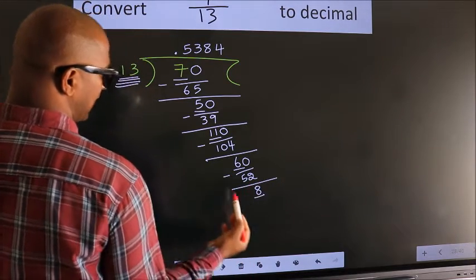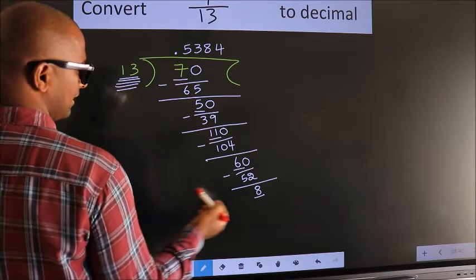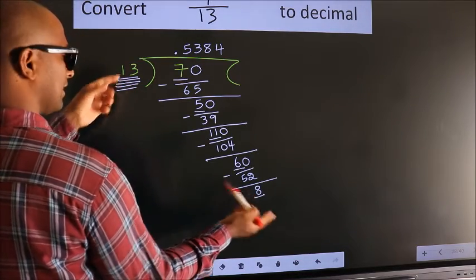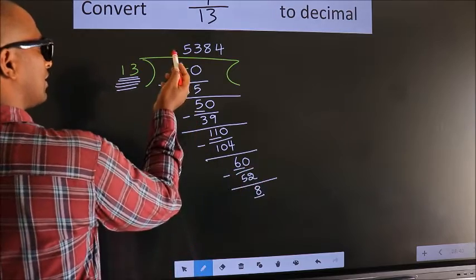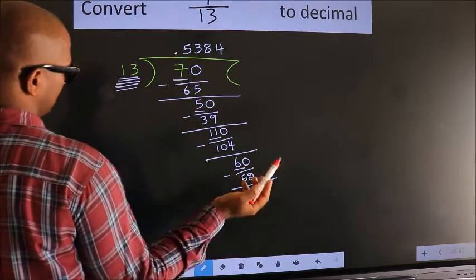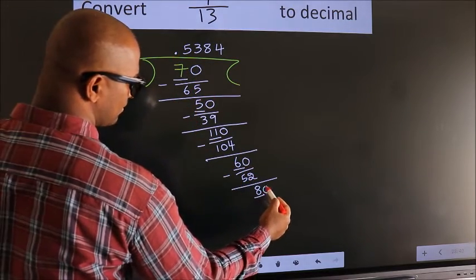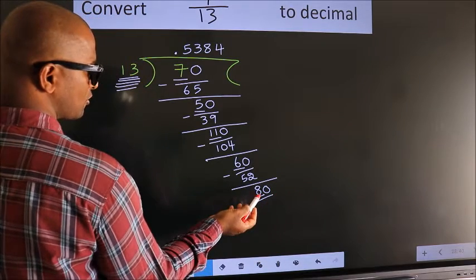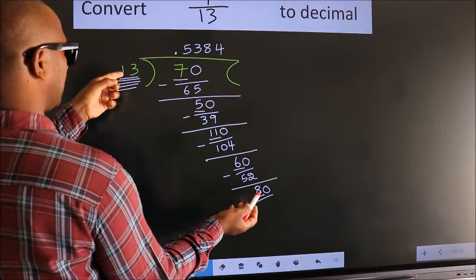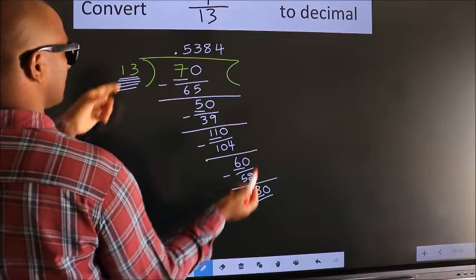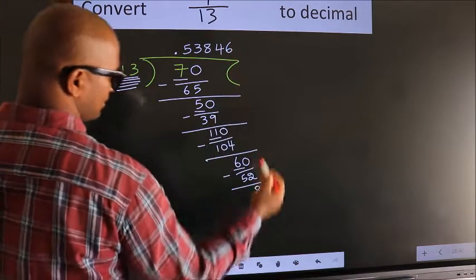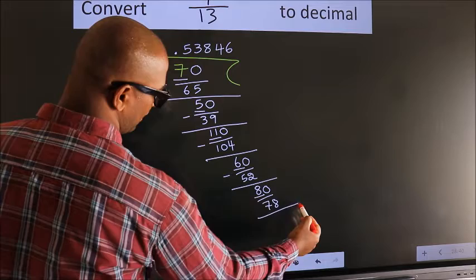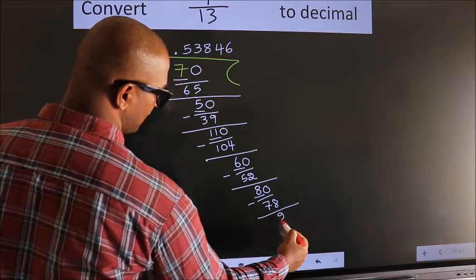Here we have 8, here 13. 8 is smaller than 13, and we already have the decimal, so we can directly take 0, making it 80. A number close to 80 in the 13 table is 13 sixes — 78. Now we subtract and we get 2.